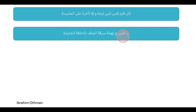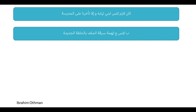Here are a couple of examples. Kan lazim labbas ibni tiabo wa illat akharna ala al madrasa. I had to dress my son up or we would have been late for school. 'Labbas' means to dress somebody up. 'Tiabo' means clothes. 'Wa illat akharna' means we would have been late.